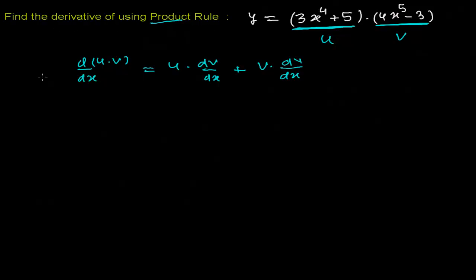So here my given function is: y = (3x⁴ + 5)(4x⁵ - 3).